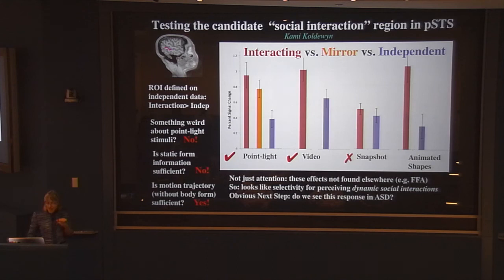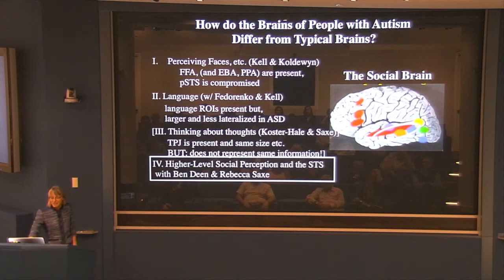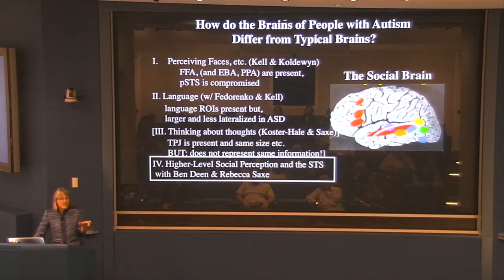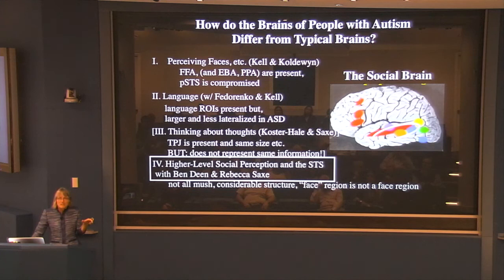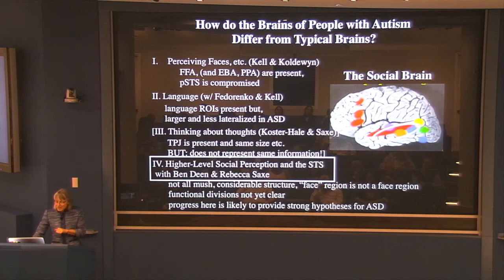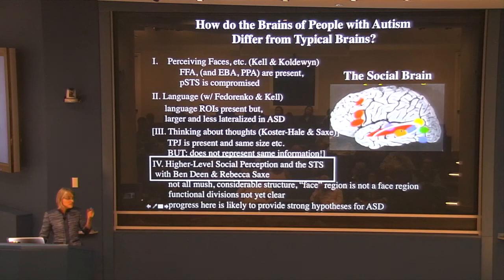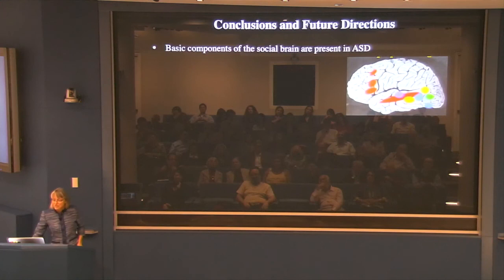This whole last section: the superior temporal sulcus has lots of interesting stuff — it's not one big multipurpose piece of social apparatus but has structure with different, quite selective responses. The face region in there is not really a face region; it responds at least as strongly to voices. There's much more to be done. I think this region is very much worth understanding better in typical subjects, and is a prime suspect for deficits in autism — we've already seen that with much lower response to moving faces in that region. To wrap up: I would argue that the basic components of the social brain are pretty much present in people with autism.